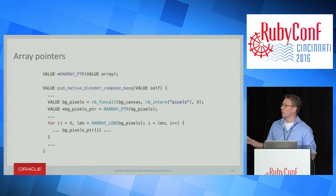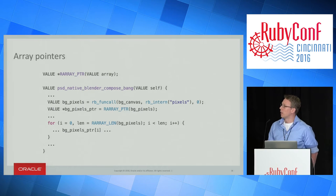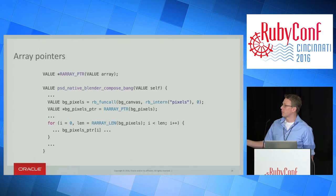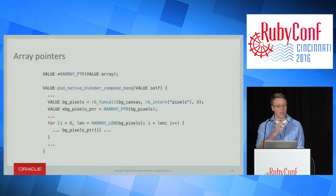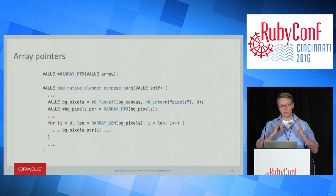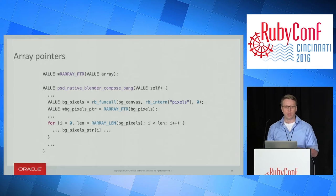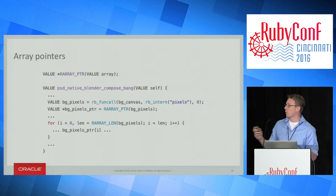The same is done for arrays: you can get the internal pointer to the values in an array. The PSD extension uses this to get the native array representing pixels in an image and process them. This means you're restricted to representing Ruby arrays as a linear sequence of heavyweight Ruby values for numbers. We'd like to represent arrays of just normal numbers as simple compact arrays, but we can't if we implement this C extension API directly.